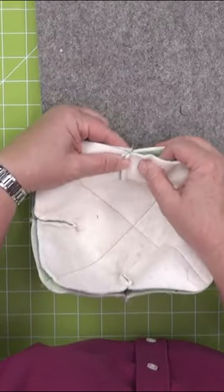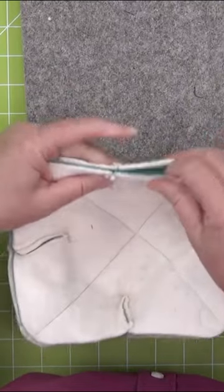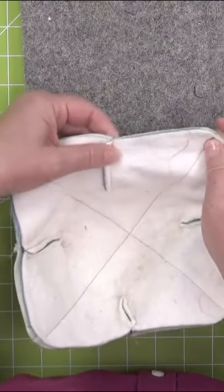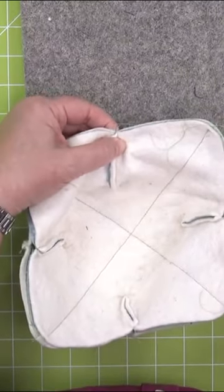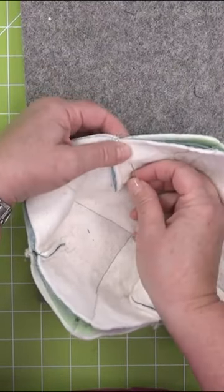See where these seams are? I'm going to turn one seam one direction and one seam the other direction. And I need to leave an opening wide enough to turn my bowl cozy inside out.